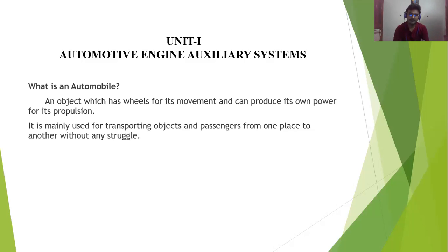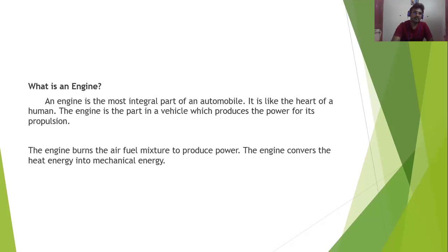An automobile means an object which can produce its own power for its own propulsion. Basically, the automobile is mainly used for transporting objects or passengers from one place to another, reducing human effort and strain. The automobile was invented for transporting people or goods without the struggle of human effort.